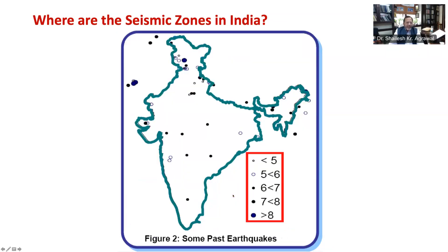Let's look at this figure, which gives prominent past significant earthquakes that occurred in and around our country. Some of these occurred in populated and urban cities and hence caused great damage, whereas many went unnoticed as they occurred deep under the earth's surface or in relatively uninhabited places.